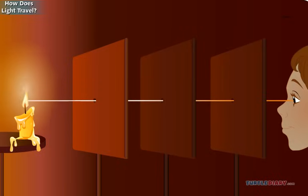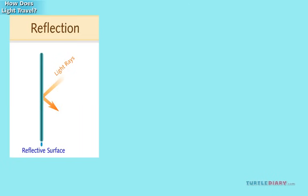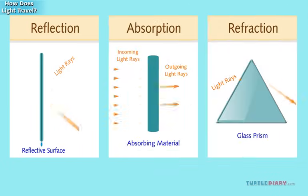If light travels in a straight line, what happens when it hits an object in its path? Well, light cannot bend to go around something. The light rays are either reflected, absorbed, or refracted.